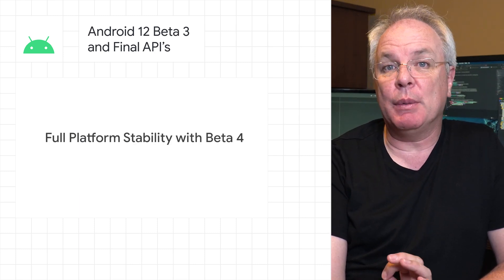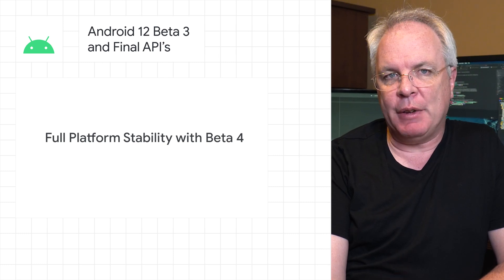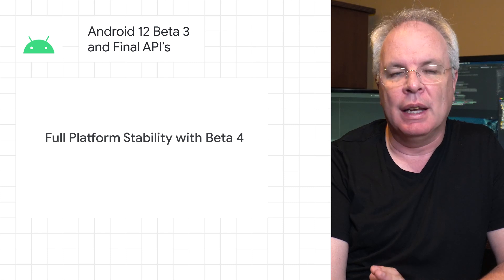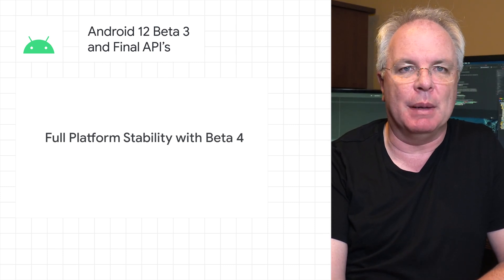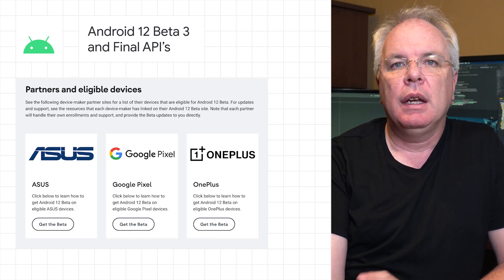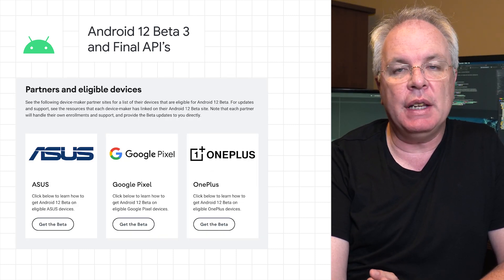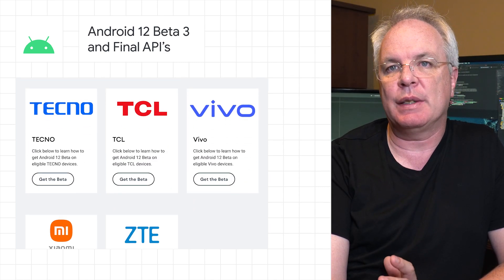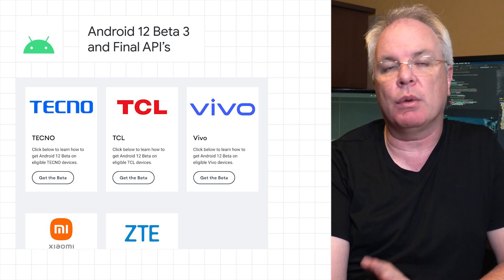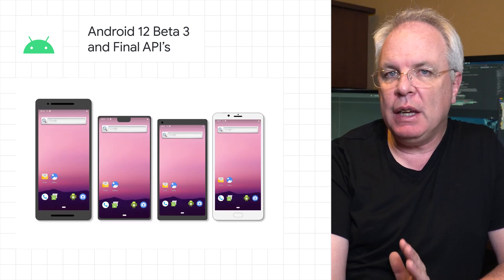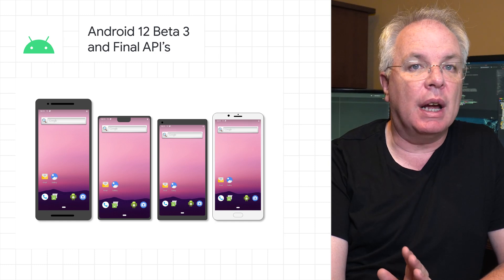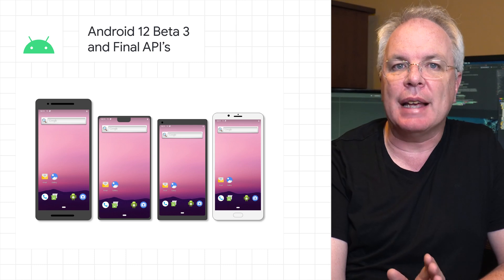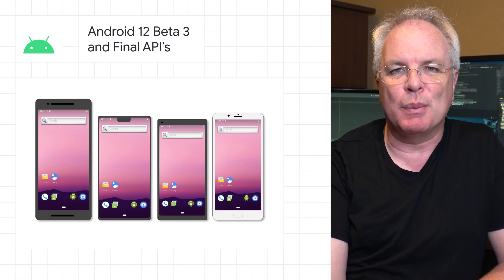We're planning full platform stability with beta 4, where all app-facing system behaviors and non-SDK interface restrictions will also be final, in addition to the API surfaces available in beta 3. You can also get Android 12 beta 3 on devices from device makers such as Sharp and TCL. Visit android.com/beta to see the full list of partners. For even broader testing, you can try the Android 12 beta on Android GSI images, or if you don't have a device, you can test using the Android emulator. Follow the links below for more details.